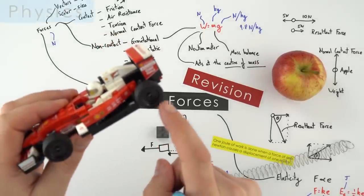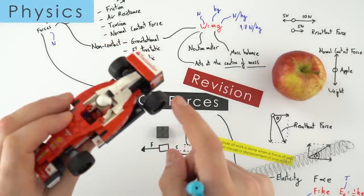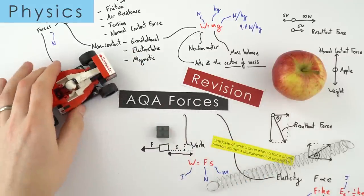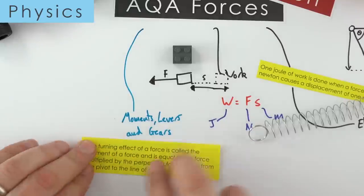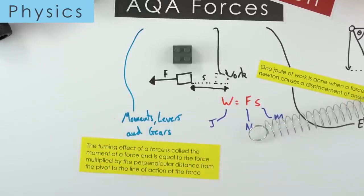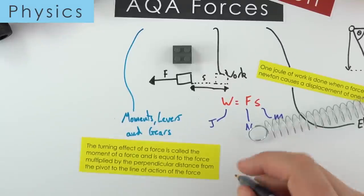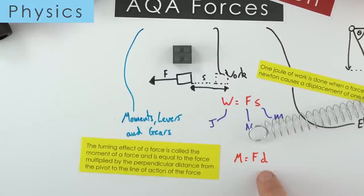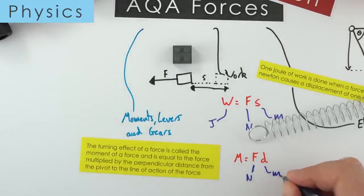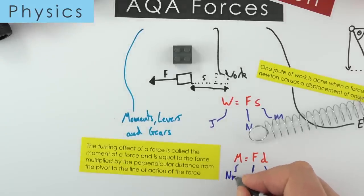If you apply a force at a distance from an axle, you can cause rotation — for example the wheels of a car or a steering wheel. This leads us to moments, levers, and gears. The turning effect of a force is called the moment, and it equals the force multiplied by the perpendicular distance from the pivot to the line of action of the force: M = F × d. Force in Newtons and distance in metres gives the moment in Newton metres.